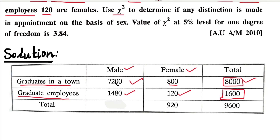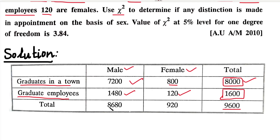In the first column, we add the totals: 7200 and 1480. Then in the last column we add: 8000 plus 1600 equals 9600. The row-wise totals are 8680 plus 920. The grand total, which we denote N, is 9600.